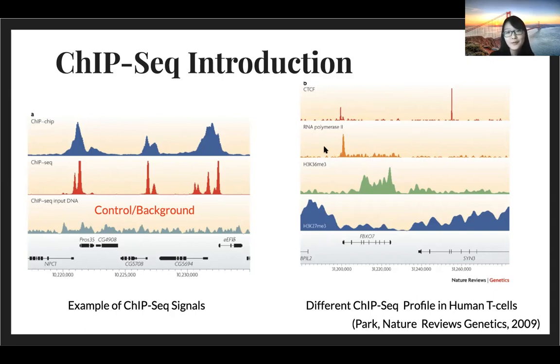For RNA polymerase II, you will see much wider peak signals. For histone modifications, it's much wider and much deeper signals compared to transcriptional factors. We keep saying peak calling for ChIP-Seq because it's like small peaks when there is a binding event at a specific location.